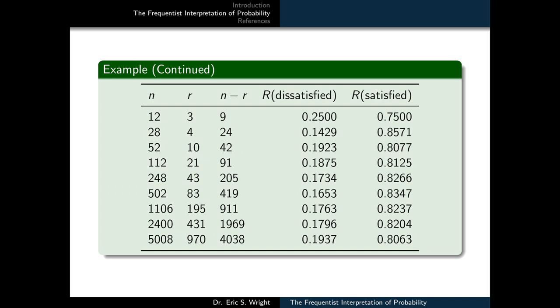We can see that our table is actually organized into five columns. The first three represent the size of the survey, the number of dissatisfied customers within that survey, and the number of satisfied customers within that survey. And then the remaining two columns represent the relative frequencies of dissatisfied and satisfied customers for each survey.